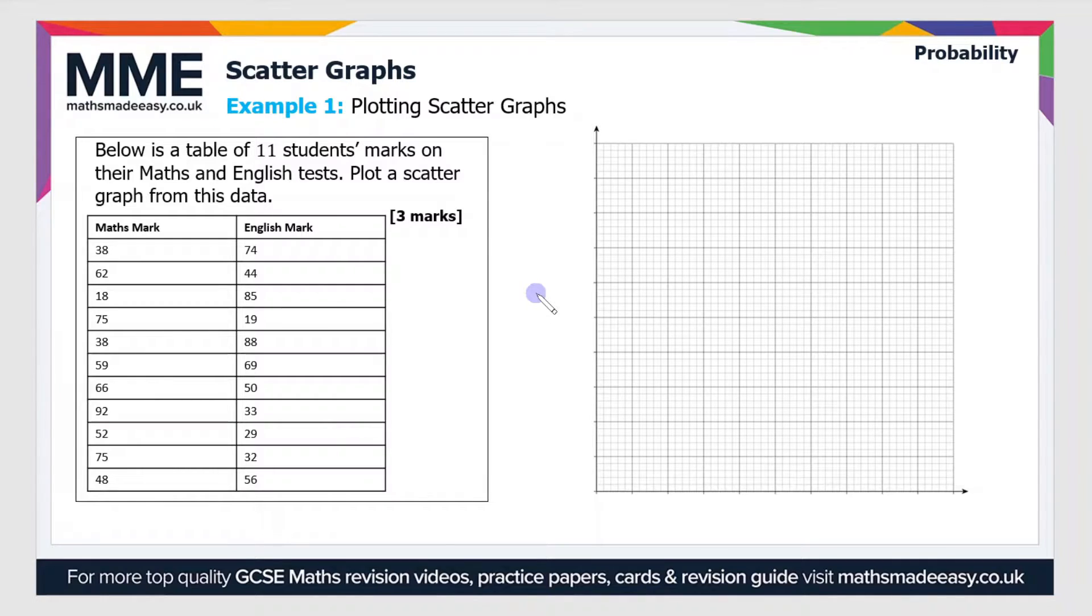The first thing we have to do is find a suitable scale. If we look through both columns and find the highest mark, in the maths mark you'll see it's 92 and in the English mark it's 88. These are the two highest points, so we need our scale to go at least as high as 92 and 88.